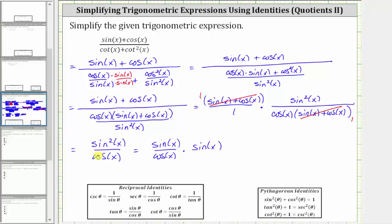Writing this fraction as a product, we should be able to recognize that sine x divided by cosine x is equal to tangent x, and therefore we can simplify this to tangent x times sine x. So the given expression simplifies to tangent x times sine x. I hope you found this helpful.